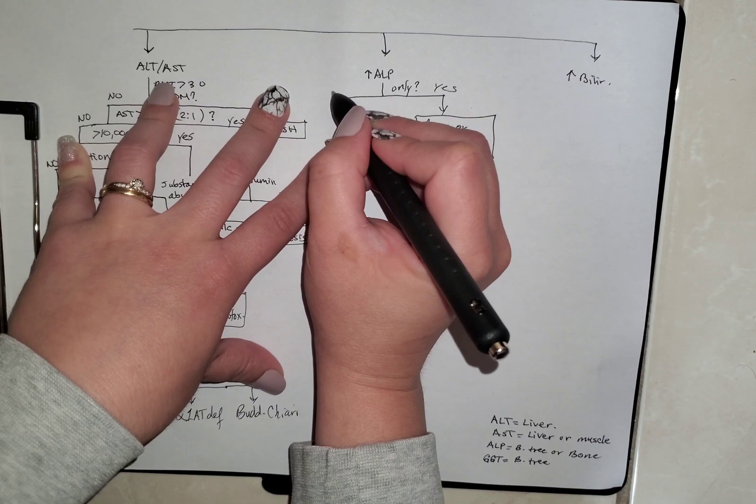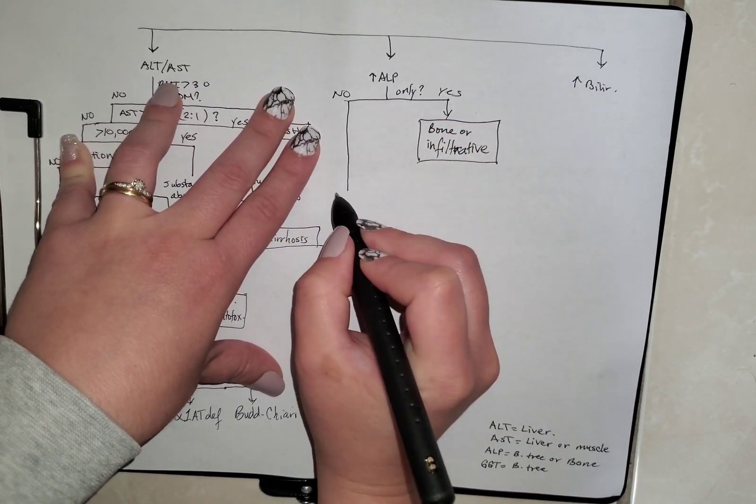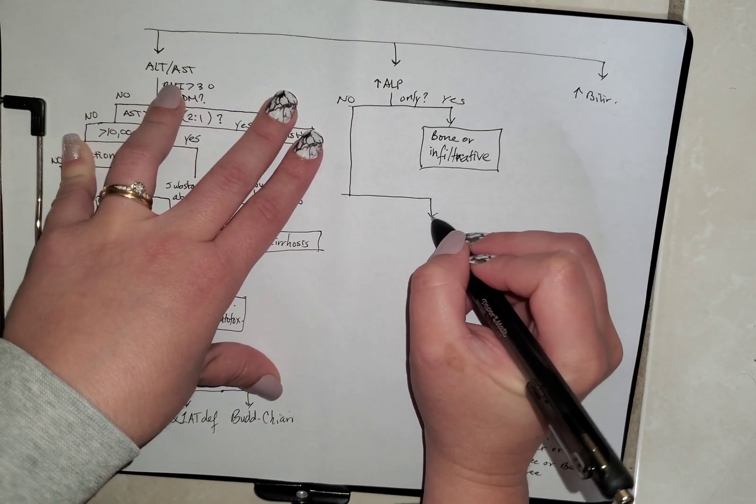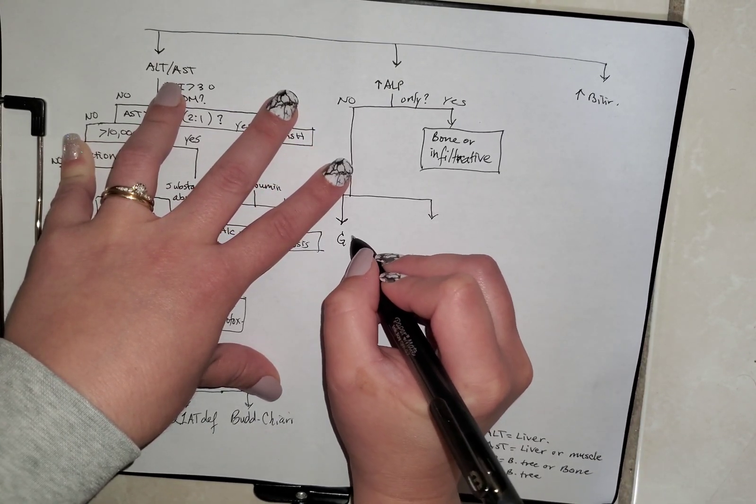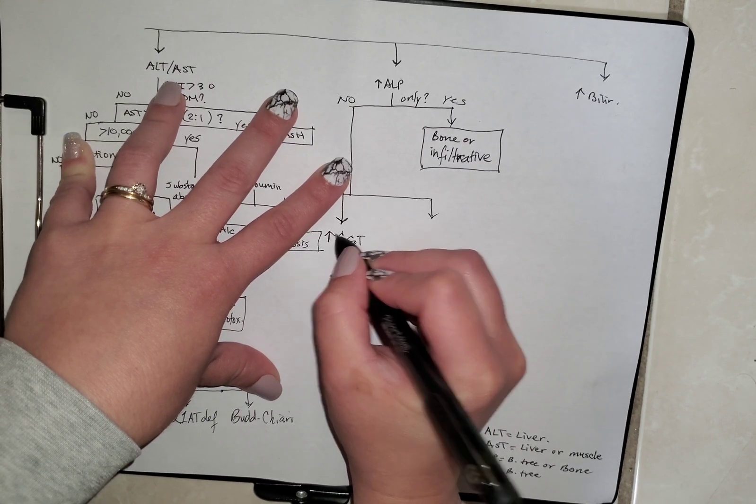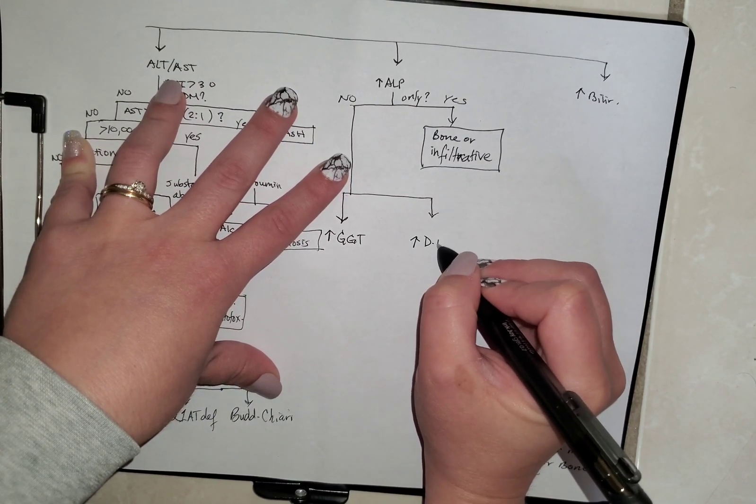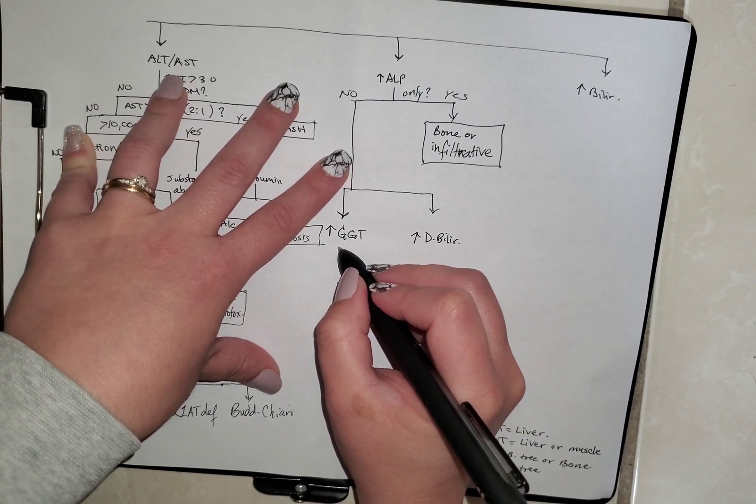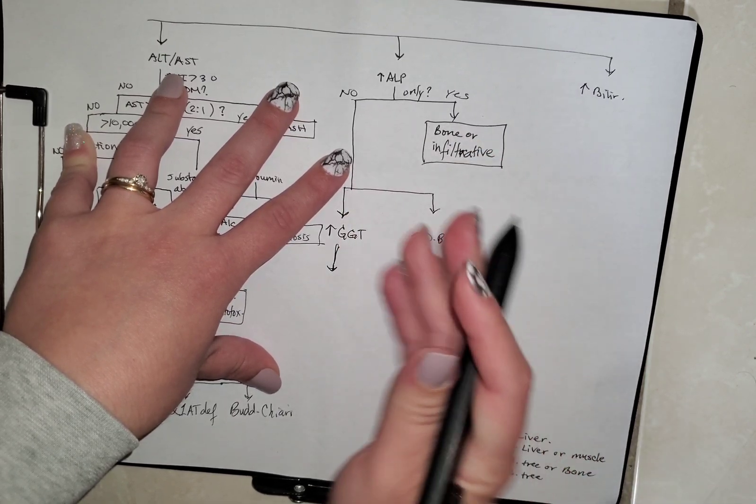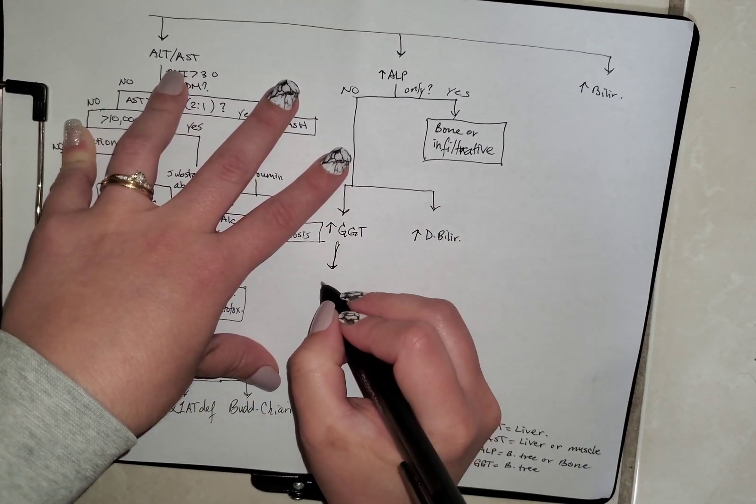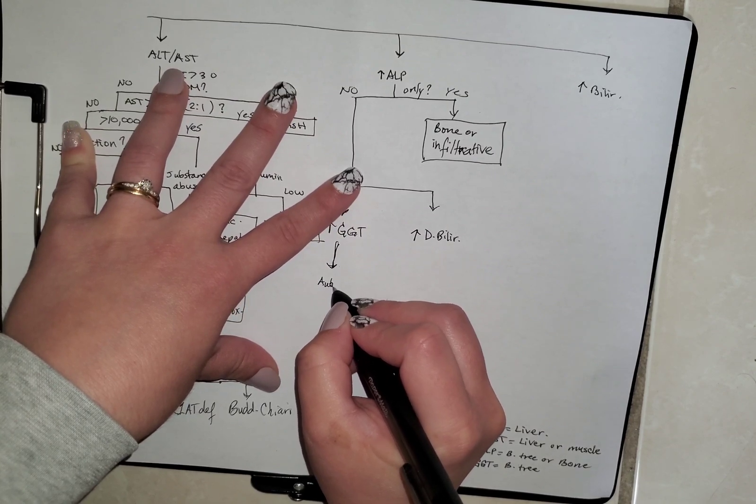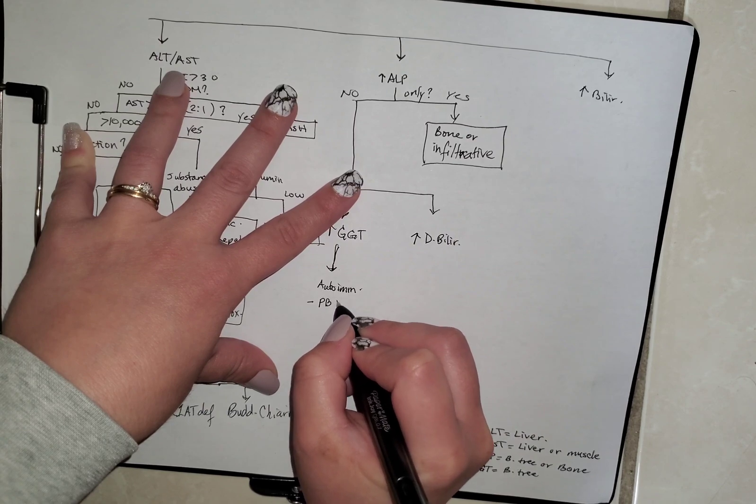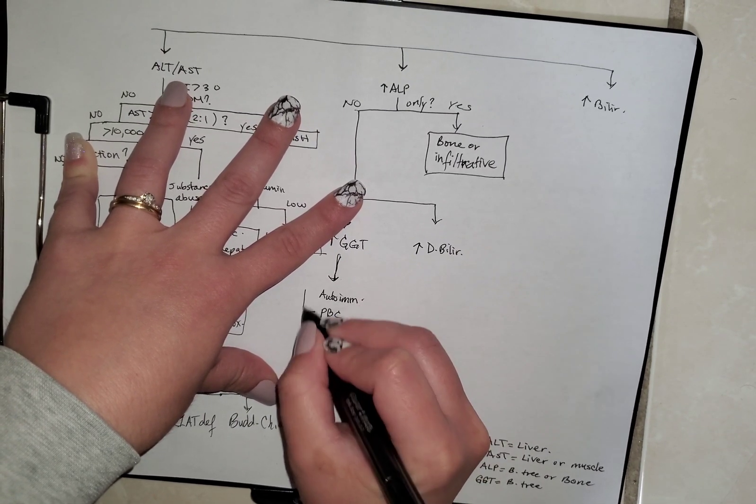If it is not just ALP that is elevated, we could have one of two things as well that are elevated. And that could be GGT being increased, or we could have an increase in direct bilirubin. So when we have an increase in GGT with ALP, nothing else, you can start looking into autoimmune causes, which could be like primary biliary cholangitis and primary sclerosing cholangitis.